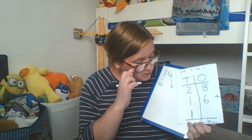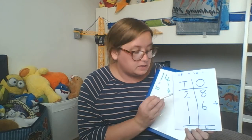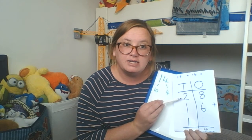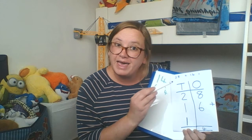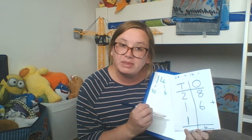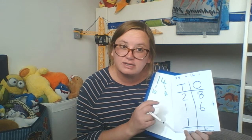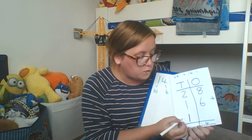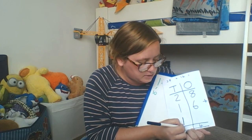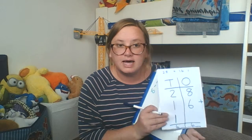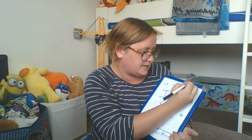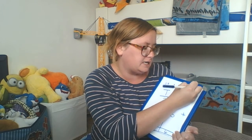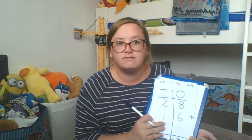Then I move to the tens column and I've got to add my tens up. I've got 2 tens add 1 ten — that's 3 tens — but then I've got my extra 10 from the exchanging. So 2 add 1 is 3, add 1 more is 4. 4 tens. That equals 44. So my answer to 28 add 16 is 44.